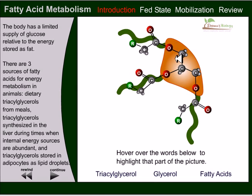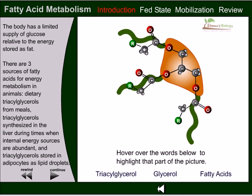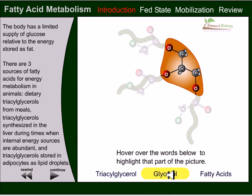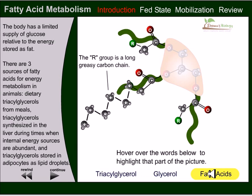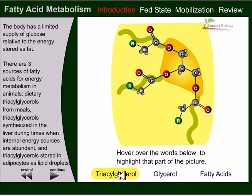Now we can see the structure of a triacylglycerol and how it actually looks. This part here is called a triacylglycerol. It is made up of a glycerol chain and different fatty acid tails. The glycerol part is the backbone of the whole structure. So if you bring the fatty acid and glycerol structures together, you will make this triacylglycerol.